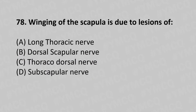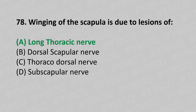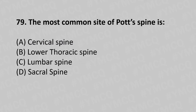Moving to our 78th question. Winging of the scapula is due to the lesion of: option A long thoracic nerve, option B dorsal scapular nerve, option C thoracodorsal nerve, option D subscapular nerve. The answer is option A, long thoracic nerve.